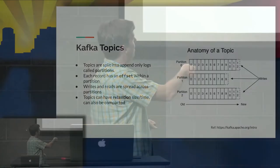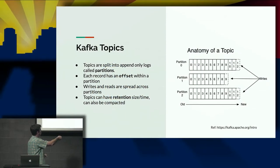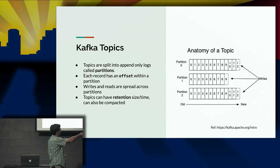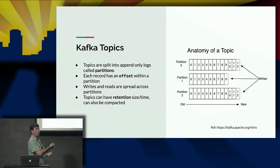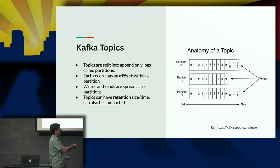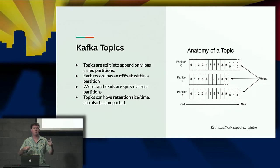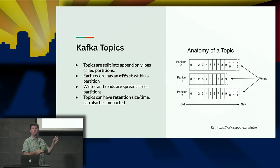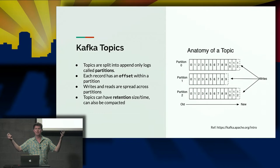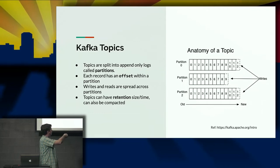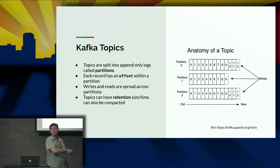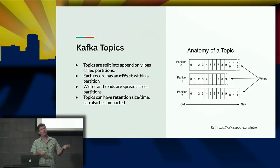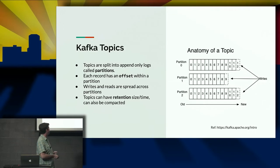Visually, you have a topic consisting of partitions — partition zero, one, two. The oldest record is at the beginning at offset zero, and producers are just appending to the ends of these partitions. Consumers can start at the beginning of the topic or at the most recent records. When you create a consumer you can tell it to start at the beginning of time or at the most recent records — paying attention to that is pretty important, because if you have 30 terabytes of data in there, you don't accidentally want to read all of it.